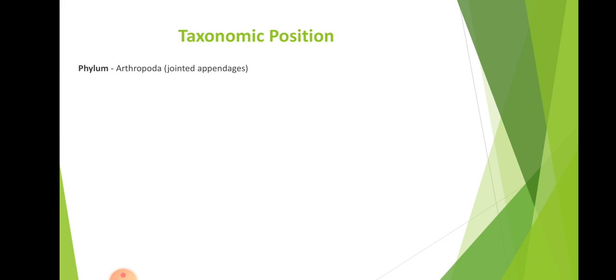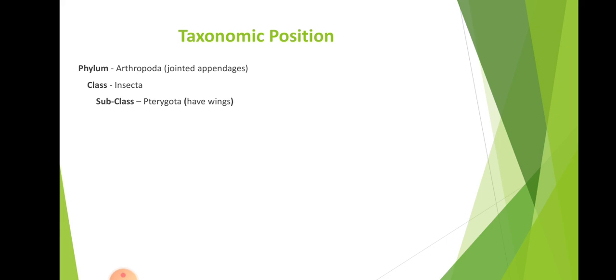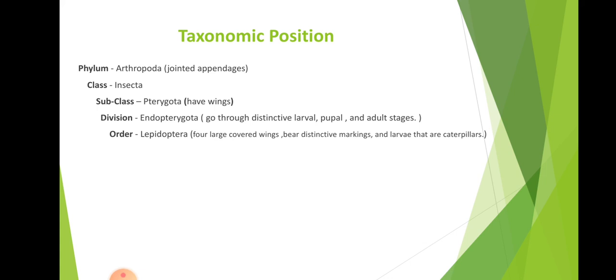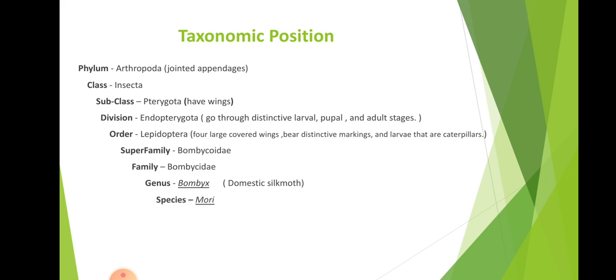Now let's see the taxonomic position of the silkworm. Its phylum is Arthropoda, having jointed appendages. Class is Insecta, subclass is Pterygota — having wings. Division Endopterygota undergoes a complete life cycle: eggs, larvae, pupa, and adult. Order is Lepidoptera, showing large covered wings with markings and larvae called caterpillars. It belongs to superfamily Bombycoidea, family Bombycidae, genus Bombyx, and species mori — the domestic silk moth.